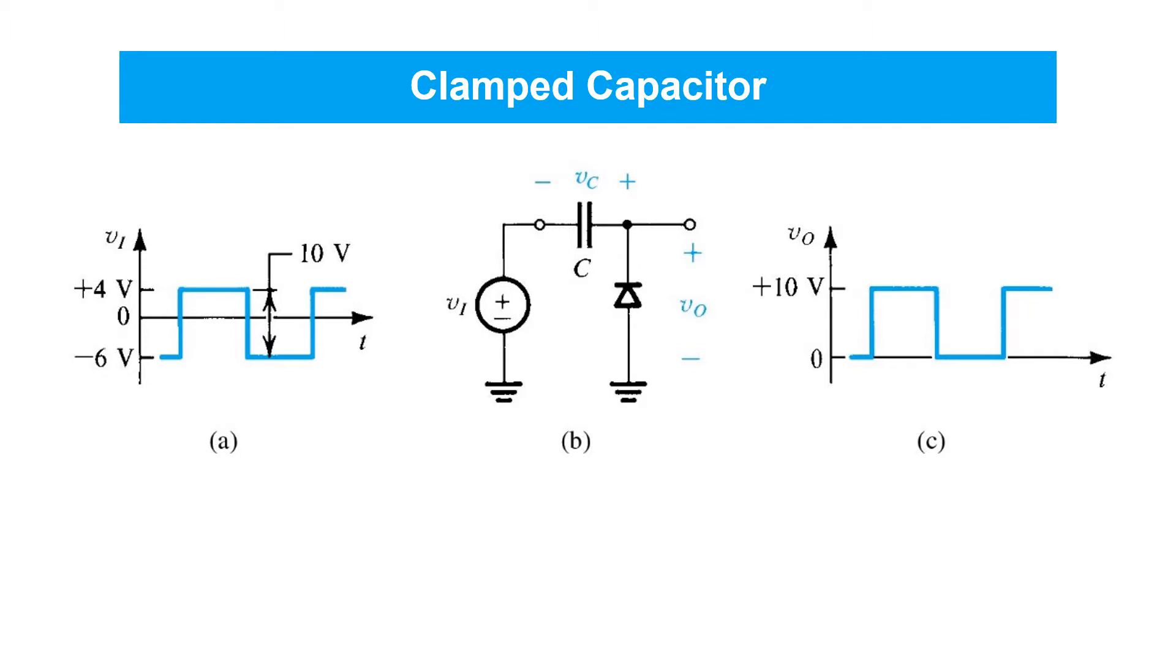One way to understand the operation of the clamp capacitor is to recognize that with the diode polarity connected as shown here, vc will simply detect and hold the most negative going peak of the waveform at vi. In this case vc would pick off the peak at negative 6 volts, and with the polarity of the diode and vc as indicated, we would see a voltage vc equal to 6 volts.